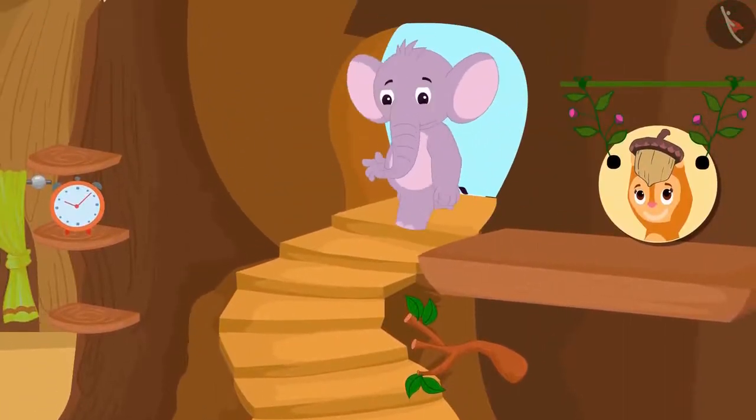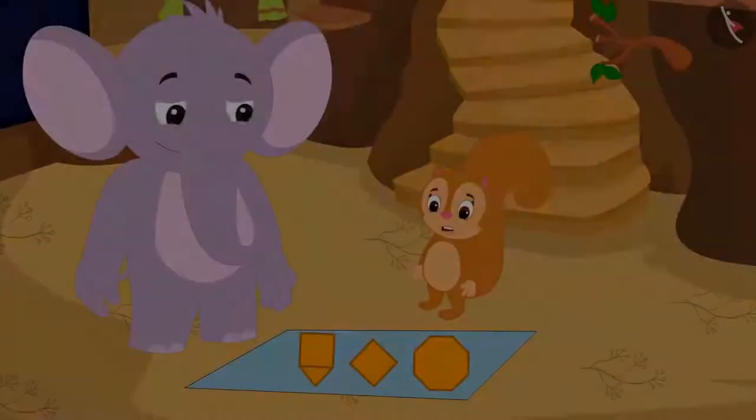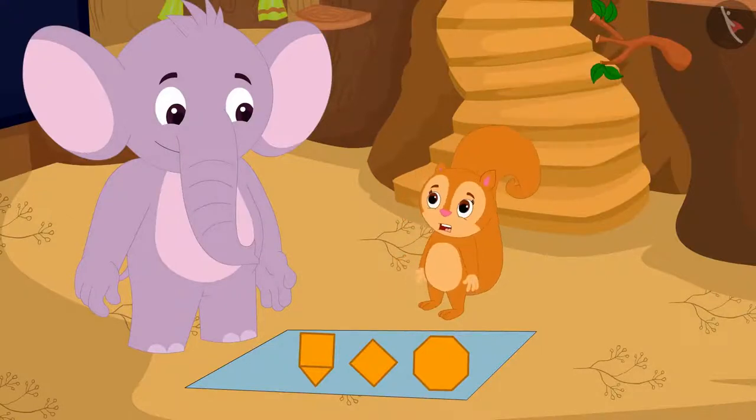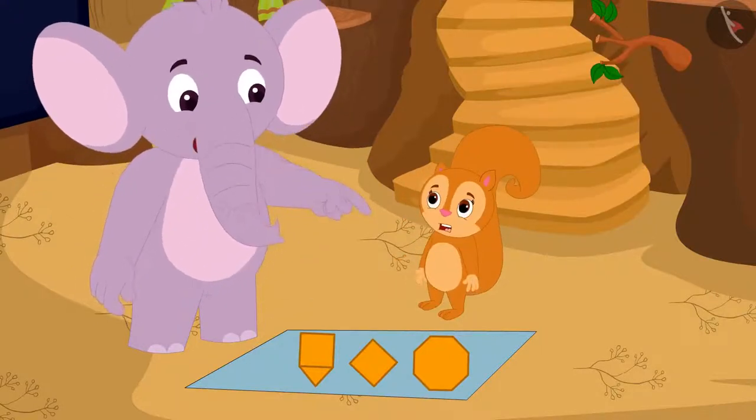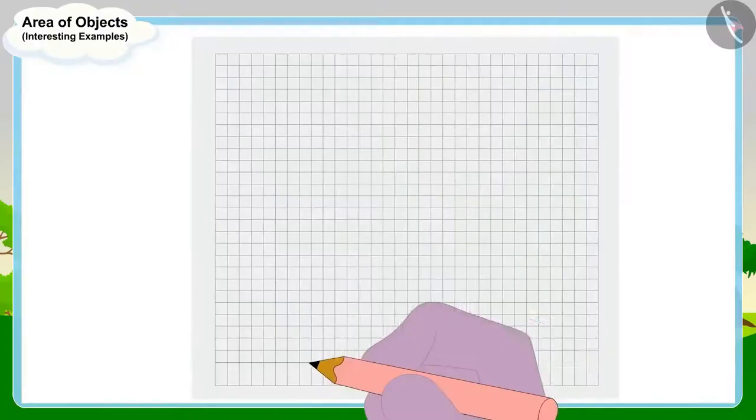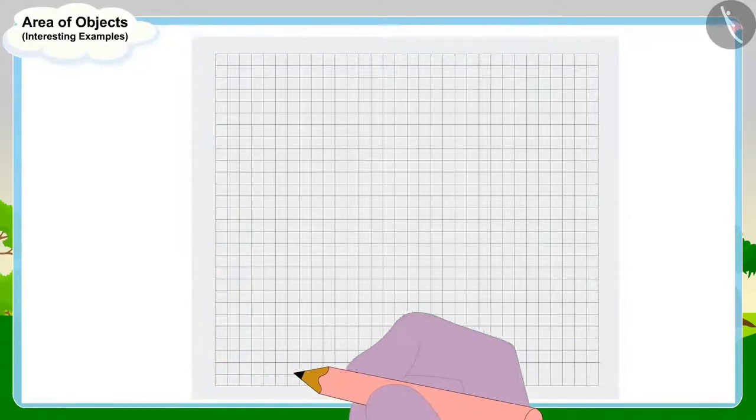Just then, Appu came to her house. Chanda asked this question to Appu. That's it. It's very easy. Appu told Chanda and quickly drew equal squares of one centimeter edges on a paper.